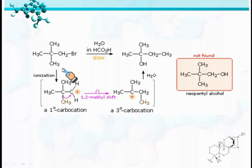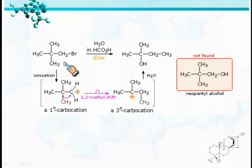When this bromo compound is treated with aqueous formic acid, it does not form neopentyl alcohol. Rather than neopentyl alcohol, it forms the following alcohol compound. This happens because first the compound undergoes debromination and generates a primary carbocation, then the methyl group of the neighboring carbon migrates to the electron-deficient carbon.